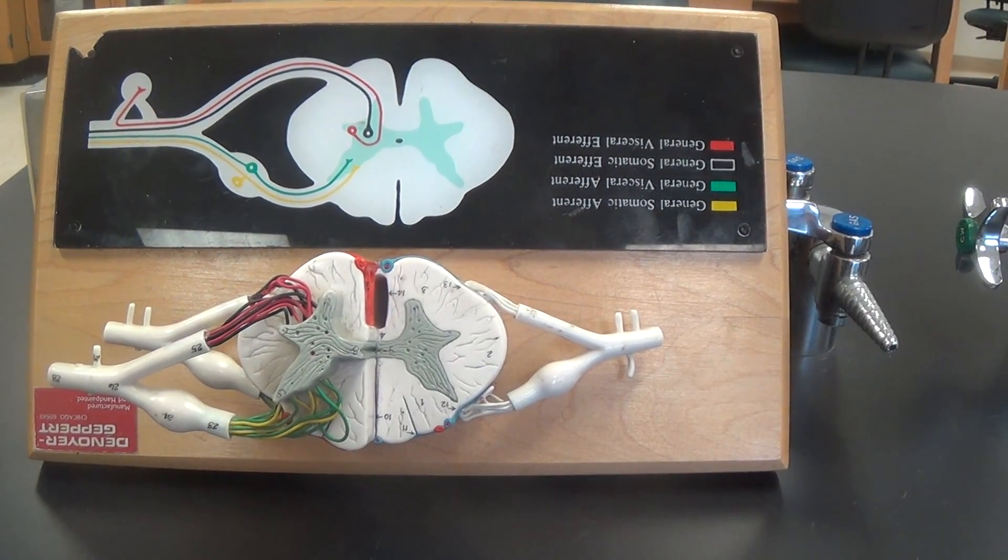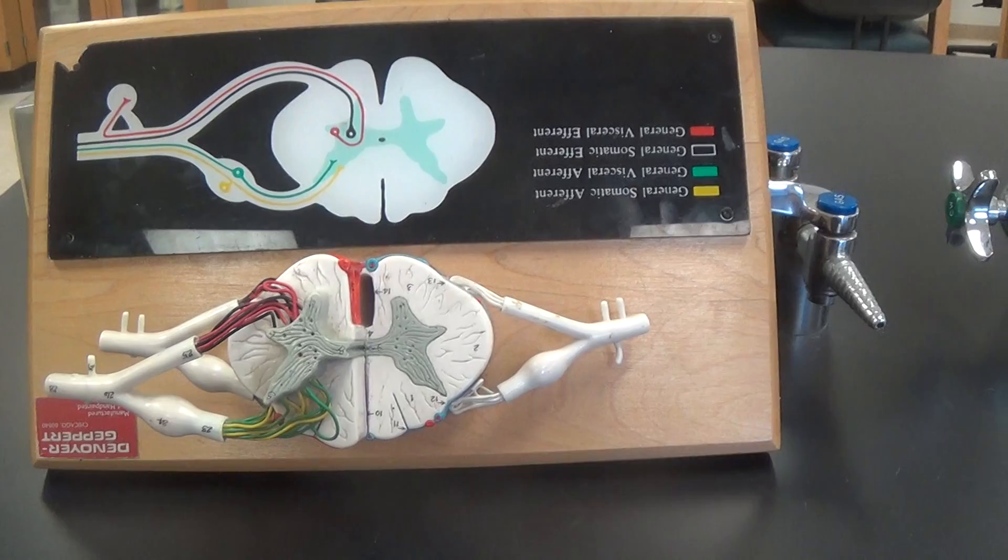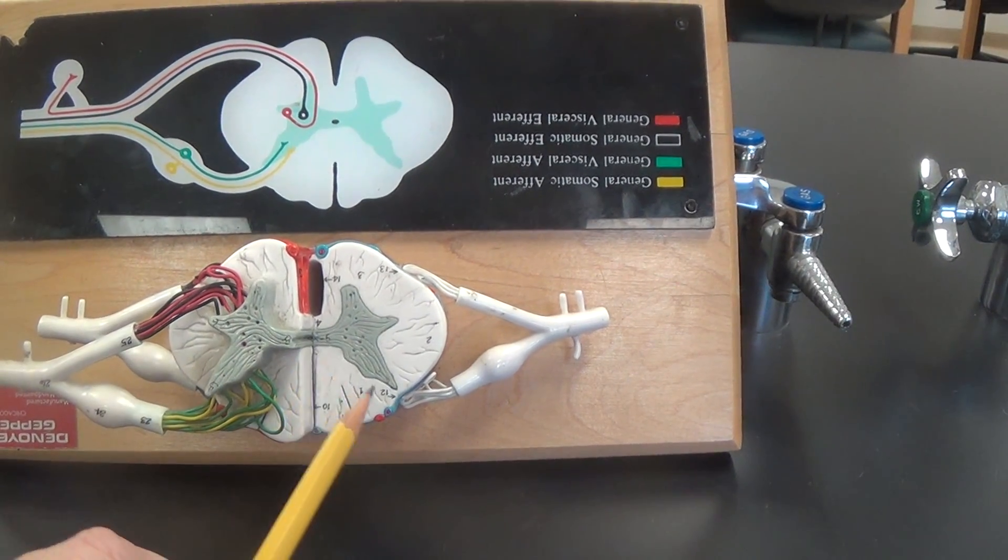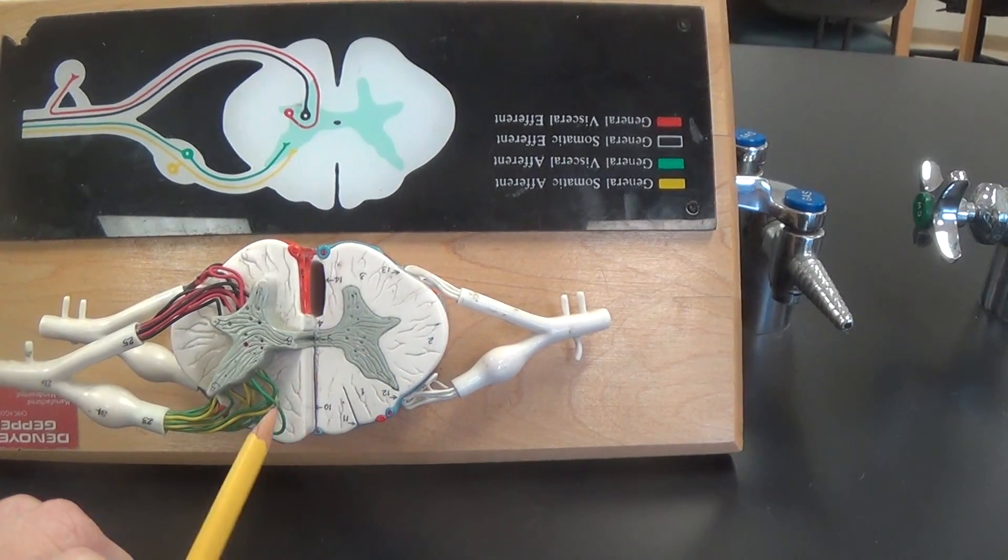This is the spinal cord model. The first separation that we should make here is between the gray matter and the white matter outside of that.